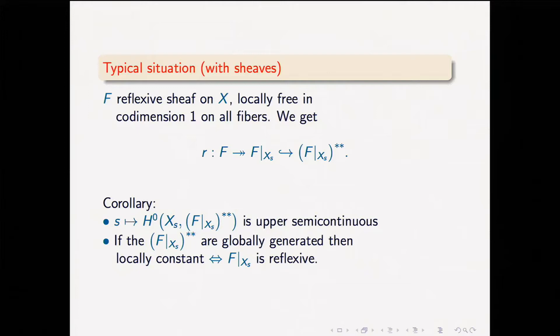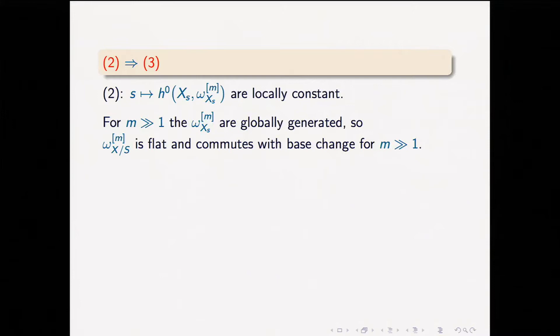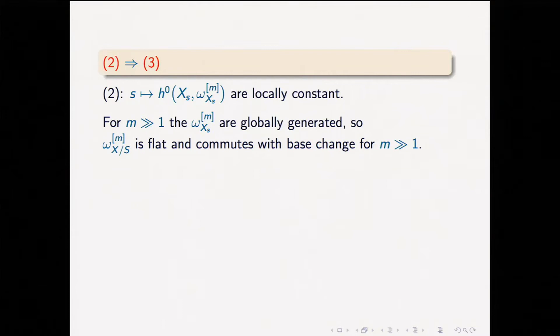Now 2 implies 3: condition 2 says these H0s are locally constant. If M is sufficiently large, then these M-th powers of omega are globally generated, because omega_X is essentially ample. When H0 is constant, that means the M-th power of omega_{X/S} is flat and commutes with base change for M sufficiently large. For small values: there's also an important assumption I sometimes forgot to write down.